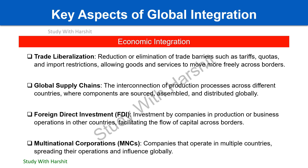Aspects of global integration में number one है economic integration, जिसमें आता है trade liberalization — reduction और elimination of trade barriers जैसे कि tariffs और import restrictions — ताकि goods और services आसानी से move हो सकें across borders. Global supply chain: interconnection of production processes across different countries, where companies source, assemble, and distribute globally — उन सभी चीज़ों को globally integrate करना.